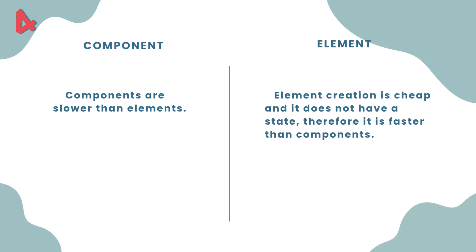Number 4: Components are slower than elements, while element creation is cheap and it does not have a state, therefore it is faster than components.